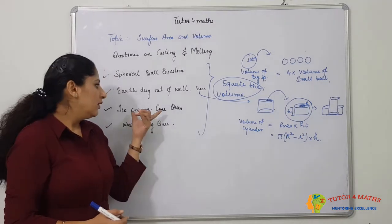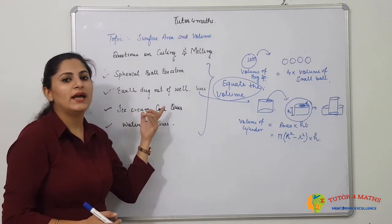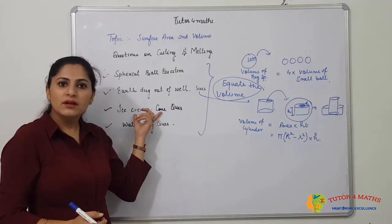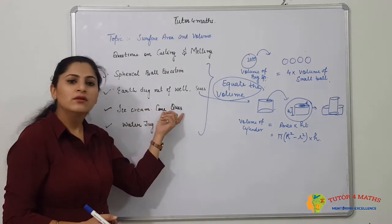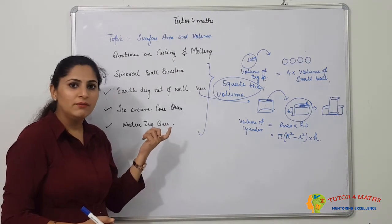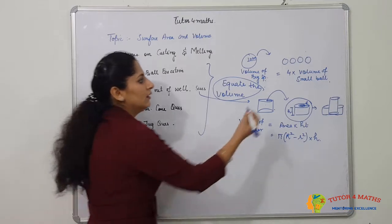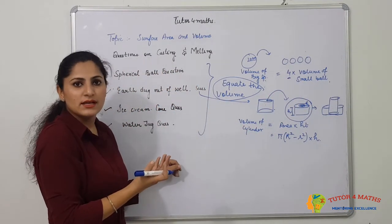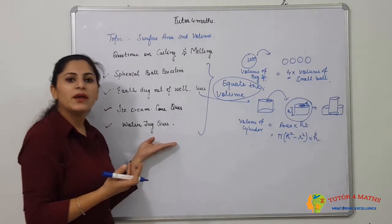Similarly, for the ice cream cone questions, we have an ice cream bar which is cubical, so the volume of that cube equals the volume of the conical cone, which is (1/3)πr²h. The number of cones can be asked or given depending on the question. There are also water jar questions of this type.